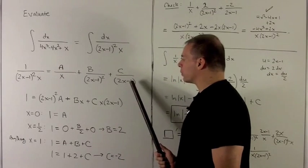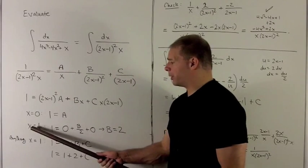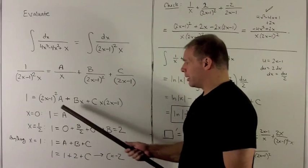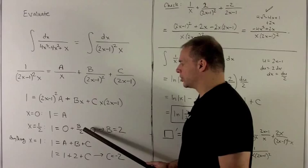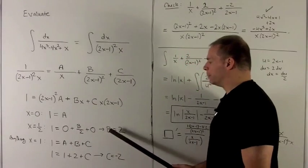For my 2x minus 1 the root's going to be a half. So if I put a half into this equation I'm going to lose the first and third term. And that's going to leave me with b over 2 is equal to 1. So b is equal to 2.